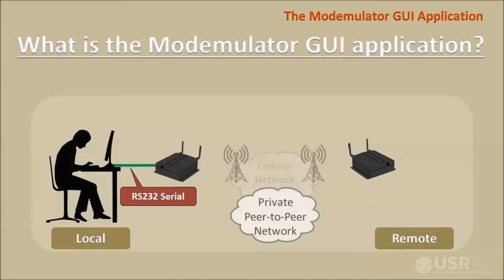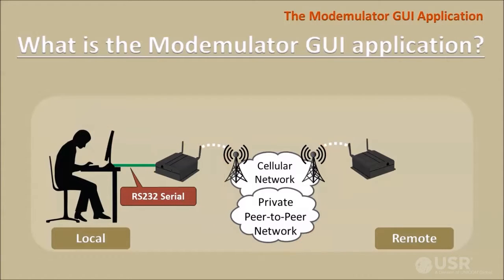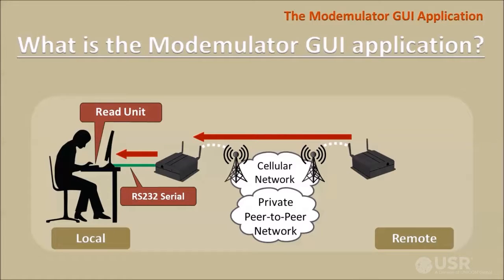When the target modemulator is remote, the GUI can be used to dial the target modemulator from a local modemulator via the cellular network. Then a read unit operation reads the remote modemulator's current settings, banners, passwords, and dialing directory into the GUI for viewing and editing. A write unit operation sends the settings, banners, passwords, and phone directory from the GUI into the remote modemulator.